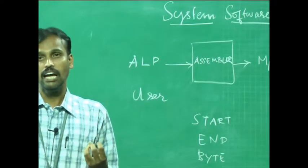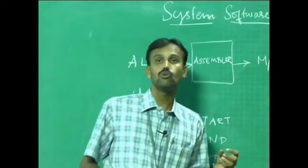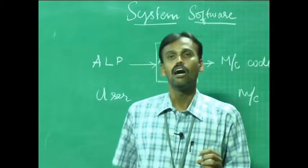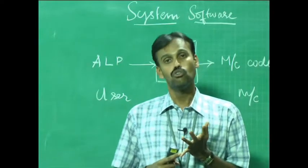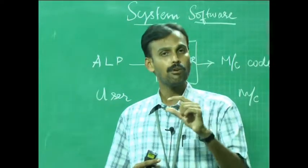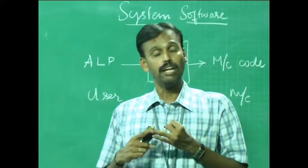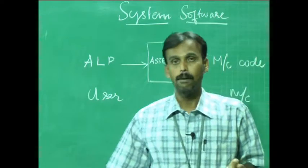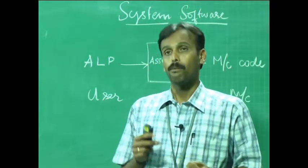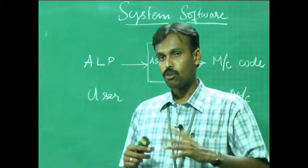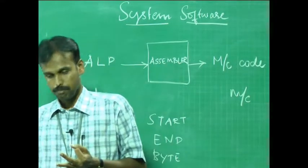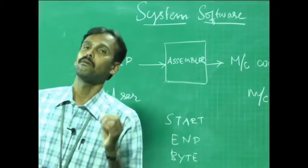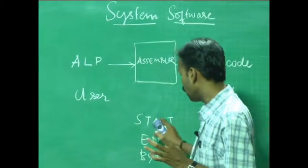An assembler is designed in two passes — a two-pass assembler. In Pass 1, we assign addresses to all statements in the program, save the values assigned to all labels for use in Pass 2, and perform processing of assembler directives. The program may contain pseudo codes, assembler directives, and labels, and in Pass 1 we process the assembler directives.